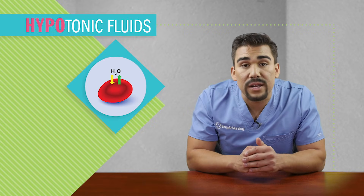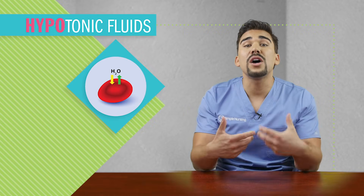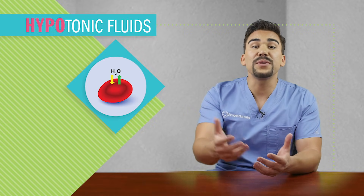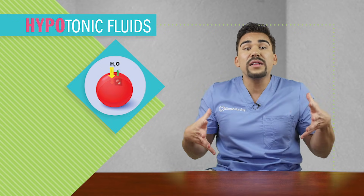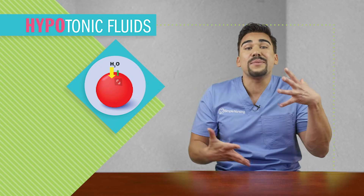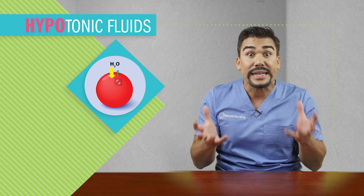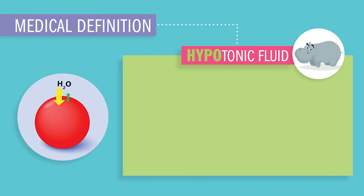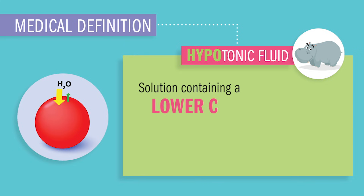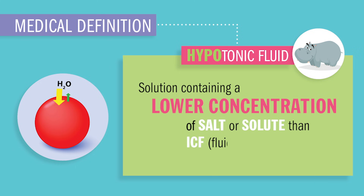First we have hypotonic fluids, which we call hippotonic fluid because fluid goes into the cell making the cell swell, making it big and puffed up and swollen just like a big hippo. So what are hypotonic fluids? Well, they're just solutions containing a lower concentration of salt or solute than ICF, or basically fluid inside the cell.